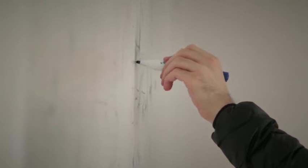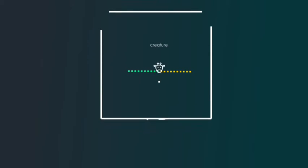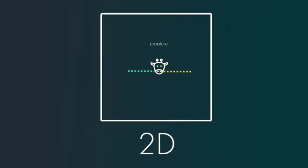For starters, we need to figure out what all the other dimensions are. Take a look at the line on the screen. This is a one-dimensional space, and a creature living in such a world can only move left or right. If we only connect several straight lines into a square, then we will get a 2D world and a new direction, up and down.